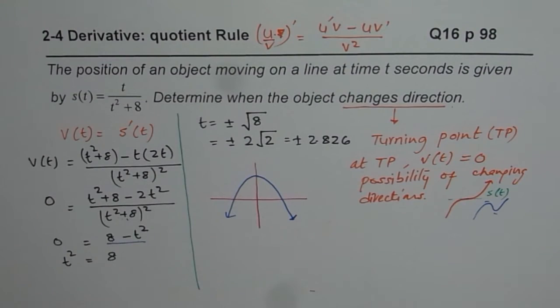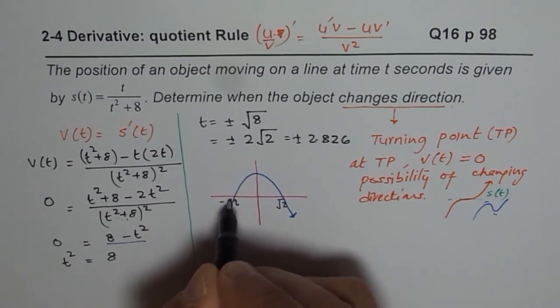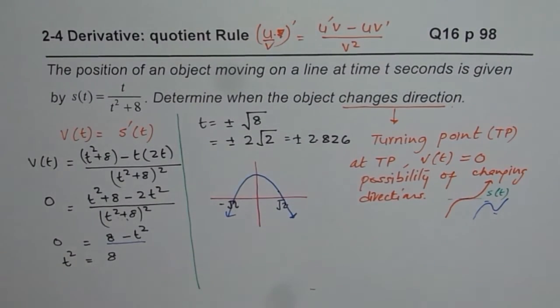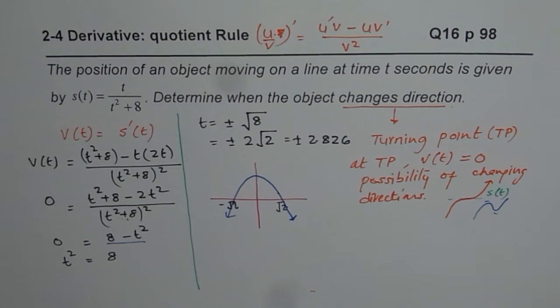These are the points which we are checking for. Square root 2. This is positive square root 2. This is negative square root 2. And you can see the velocity changes from positive to negative here and negative to positive. So, direction changes for both times.